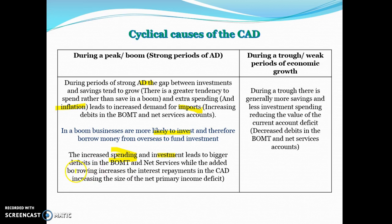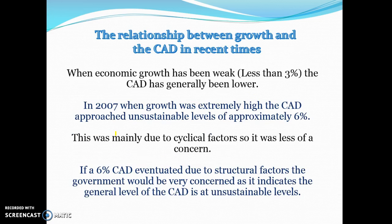This also means we borrow more during peak periods, which increases interest payments as well. During a trough, there is generally more savings and less investment, reducing the current account deficit. We don't spend as much on imports and there's not as much investment spending. Overall, we experience higher CADs when we have high levels of growth and lower CADs when we are in a trough or experiencing low levels of economic activity — because we spend more at a peak.